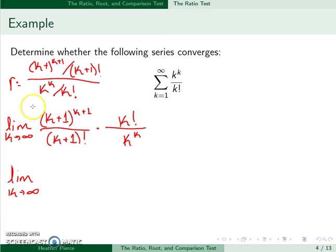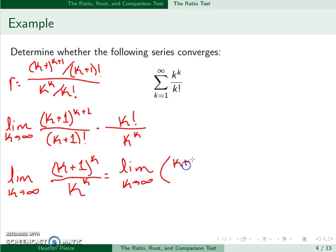So we'll see that the denominator, k plus 1 factorial, and this k factorial will cancel to a k plus 1 the same way the last example did. However, combined with this other k plus 1 term, we end up getting k plus 1 to the kth power all over k to the kth power. So this is the limit as k goes to infinity of k plus 1 over k to the kth power.